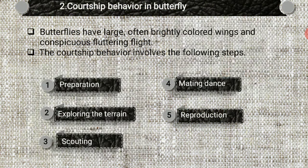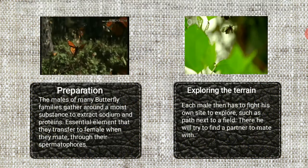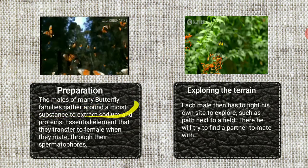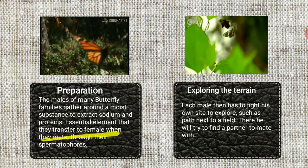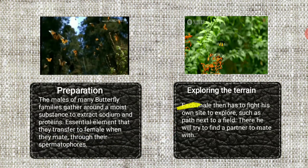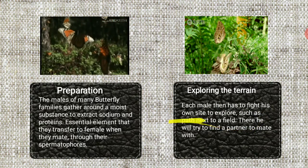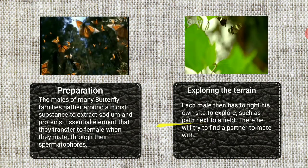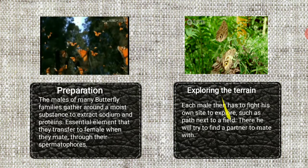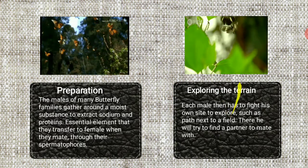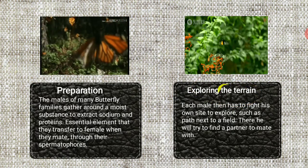Next we move on to the courtship behavior in butterflies. Butterflies have large, often brightly colored wings and conspicuous fluttering flight. The courtship behavior involves the following steps: preparation, exploring the terrain, scouting, mating dance, and reproduction. Preparation: the males of many butterfly families gather around moist substances to extract sodium and protein — the two essential elements that transfer to the female when they mate through their spermatophore. The next step is exploring the terrain: each male then has to fly within his own territory to explore paths next to fields. He will try to find a partner to mate with, and here you observe how the male exploring the terrain does not allow other males into his territory but allows females.